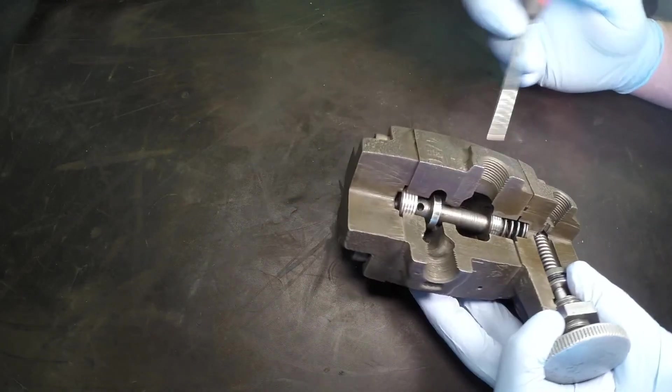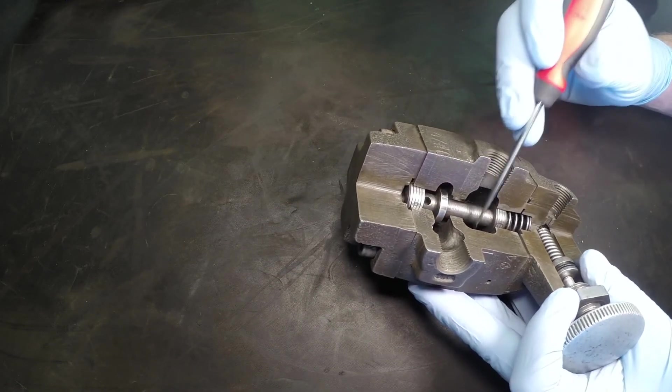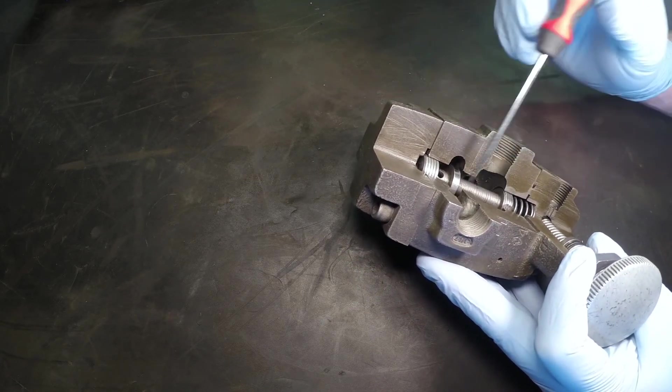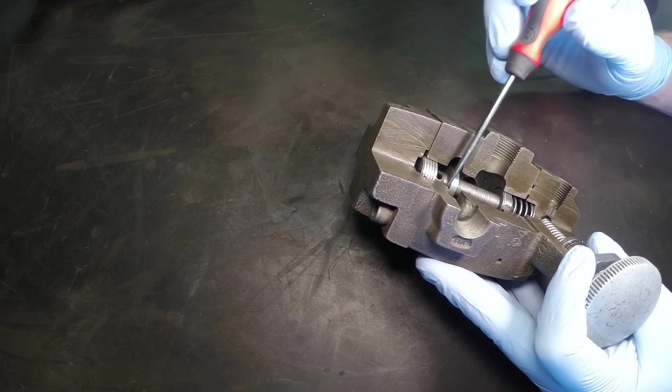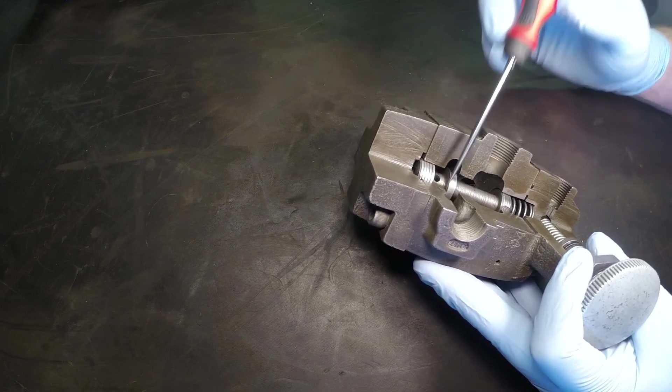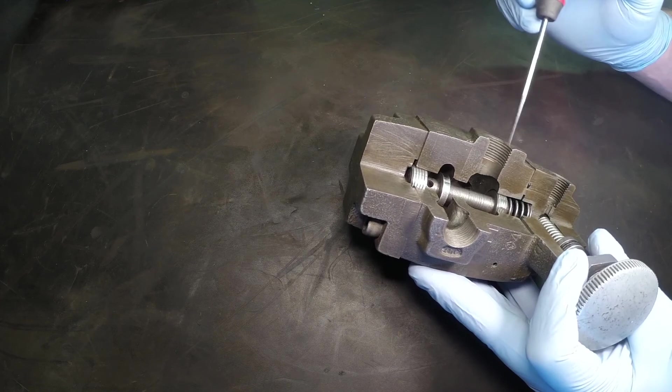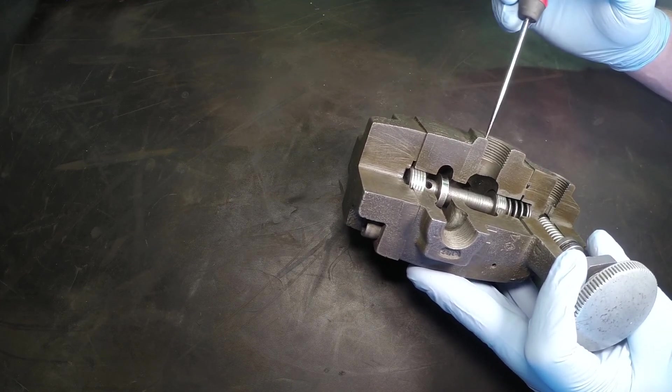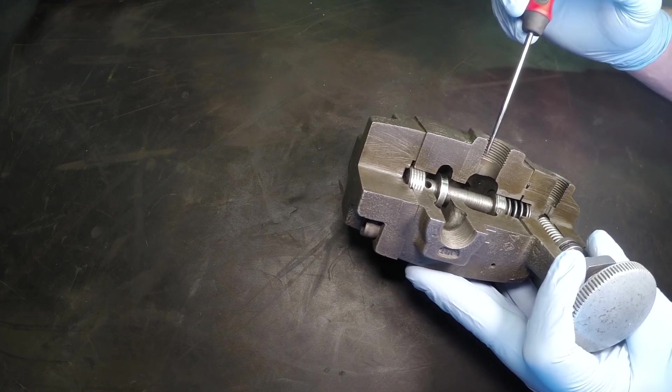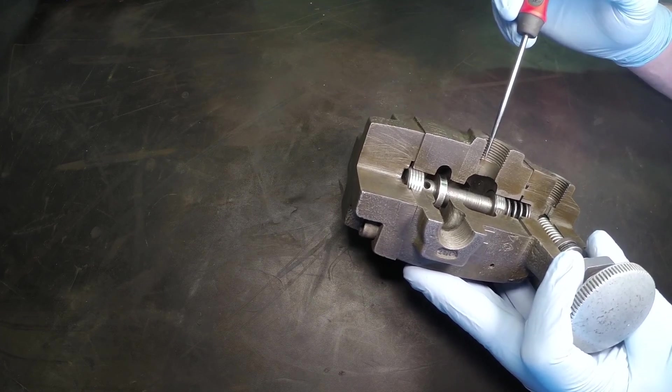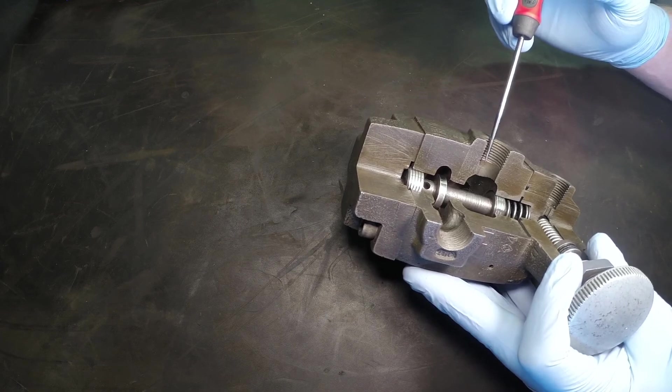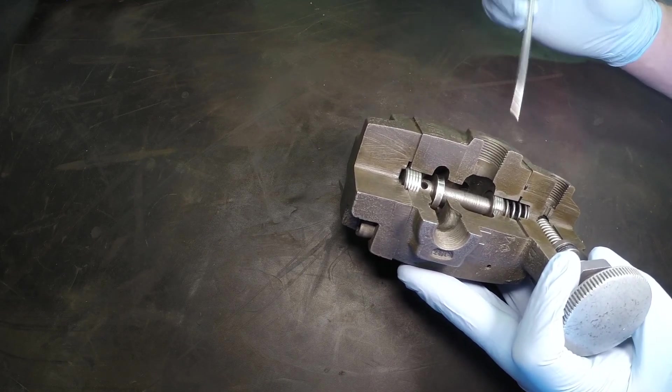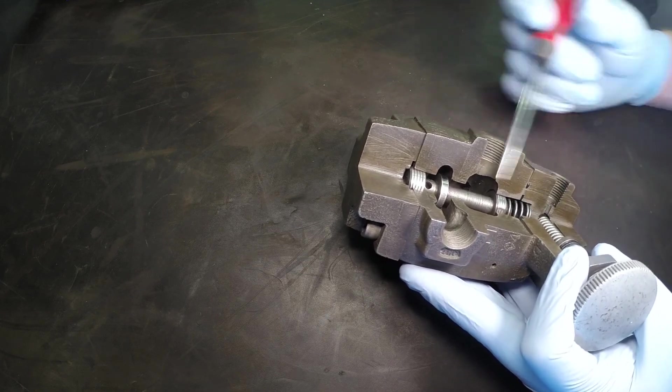So the point of our pressure reducing valve then is to allow us to have full flow and pressure on one side and controlled pressure on another circuit, all the while only having one directional control valve work port being used to do that. Obviously, we'd have the supply off of the directional control valve and the return coming from the cylinder and the motor that's not shown in this valve.